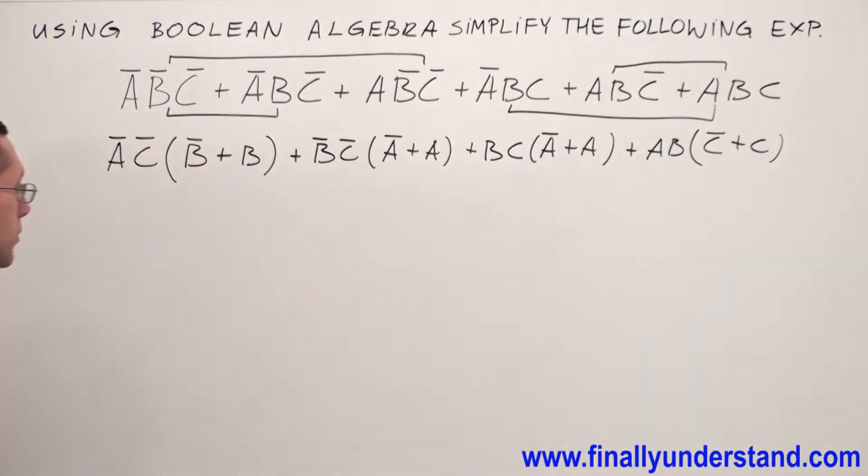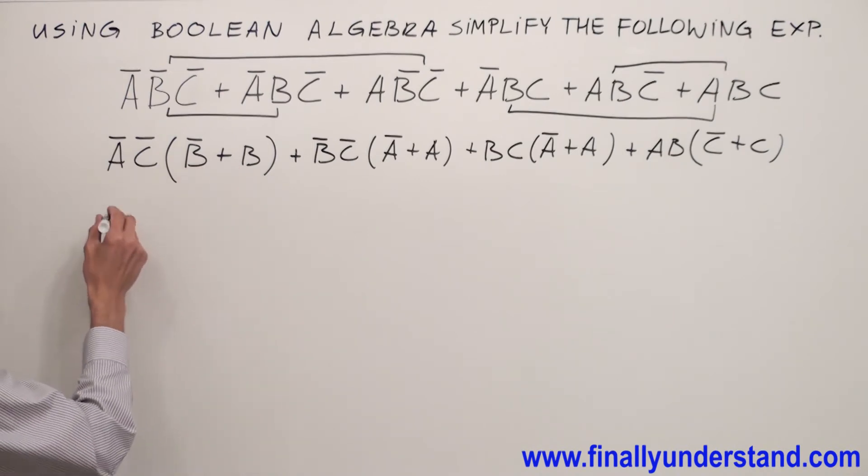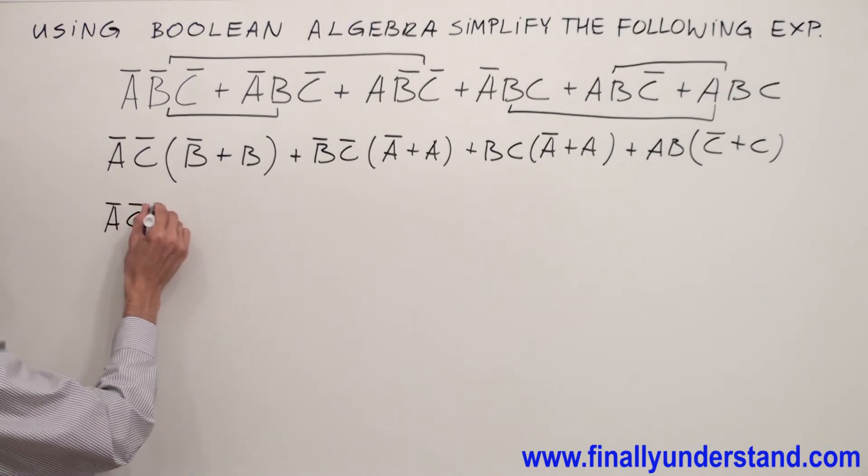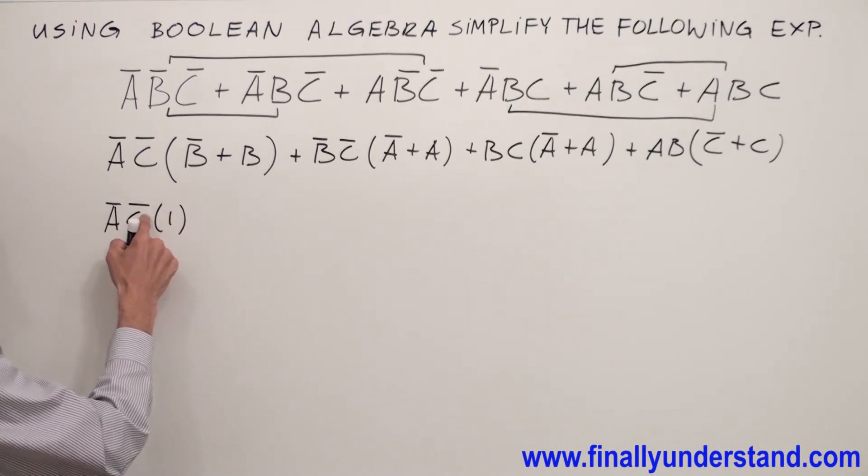Remember that complements or with each other are going to always give me 1. That's why I'm going to have A̅C̅ and 1. Remember, anytime I have multiplication this is called AND.